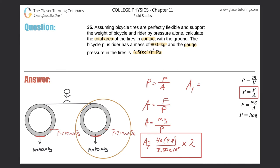We can now just plug this into the calculator. We have 40 times 9.8 times 2, all divided by 3.5 times 10 to the 5.